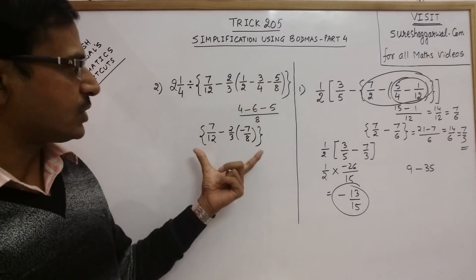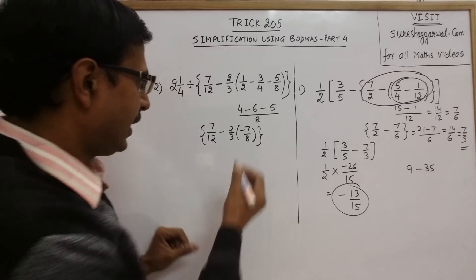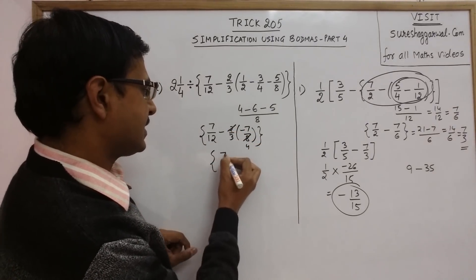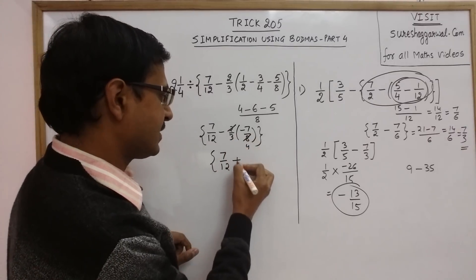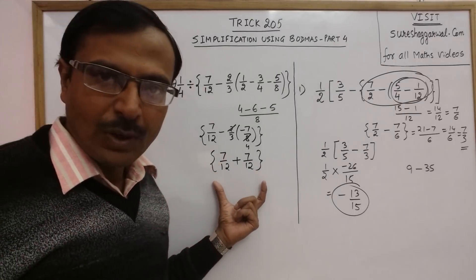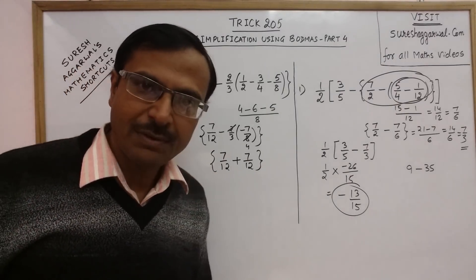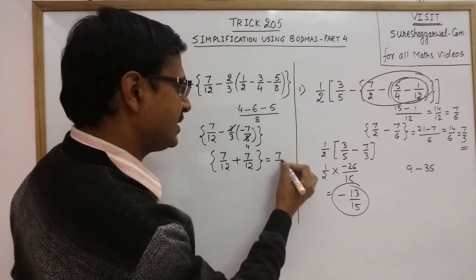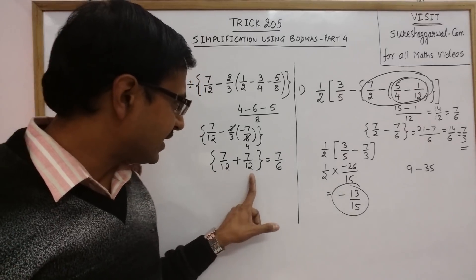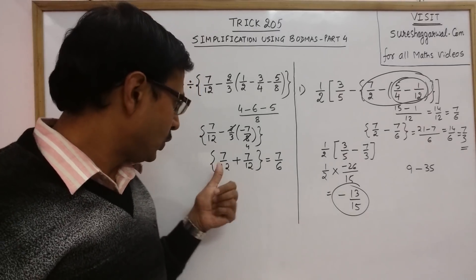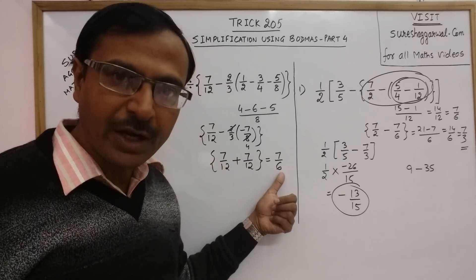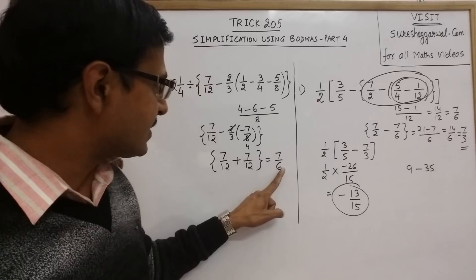Our curly bracket reduces to this: we can cancel the 2 with 4, so the curly bracket becomes 7/12 minus (minus), which is plus, 7/12 again. So 7/12 plus 7/12 is twice of 7/12 — the 2 and 12 cancel to give a denominator of 6, so the result is 7/6.